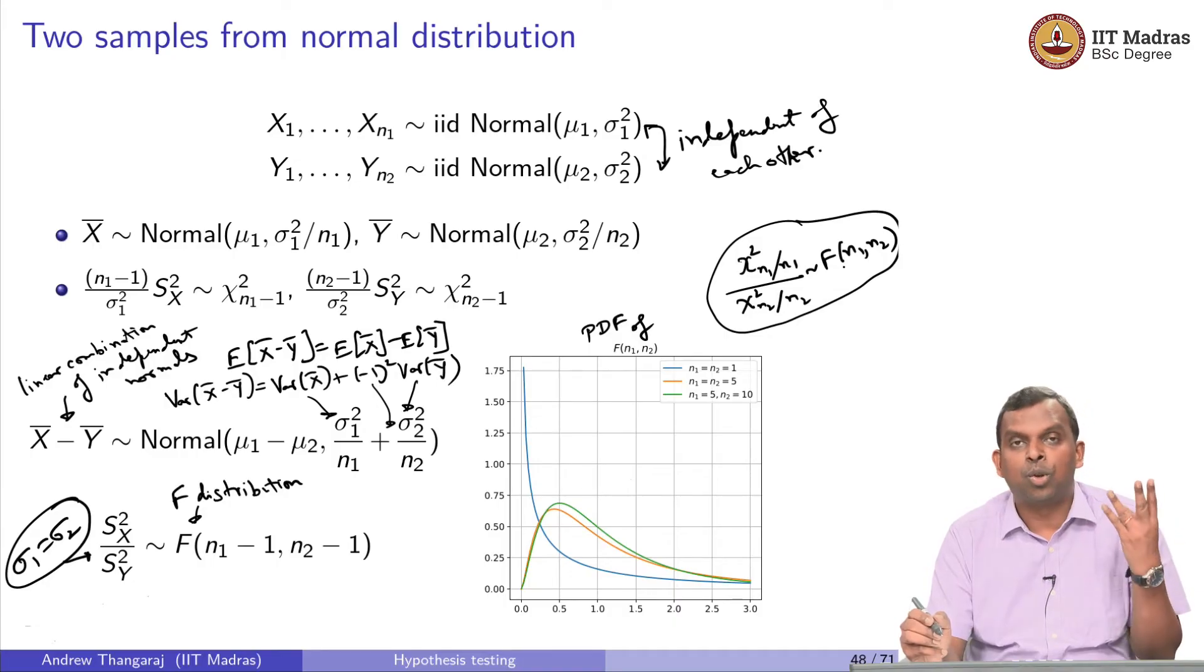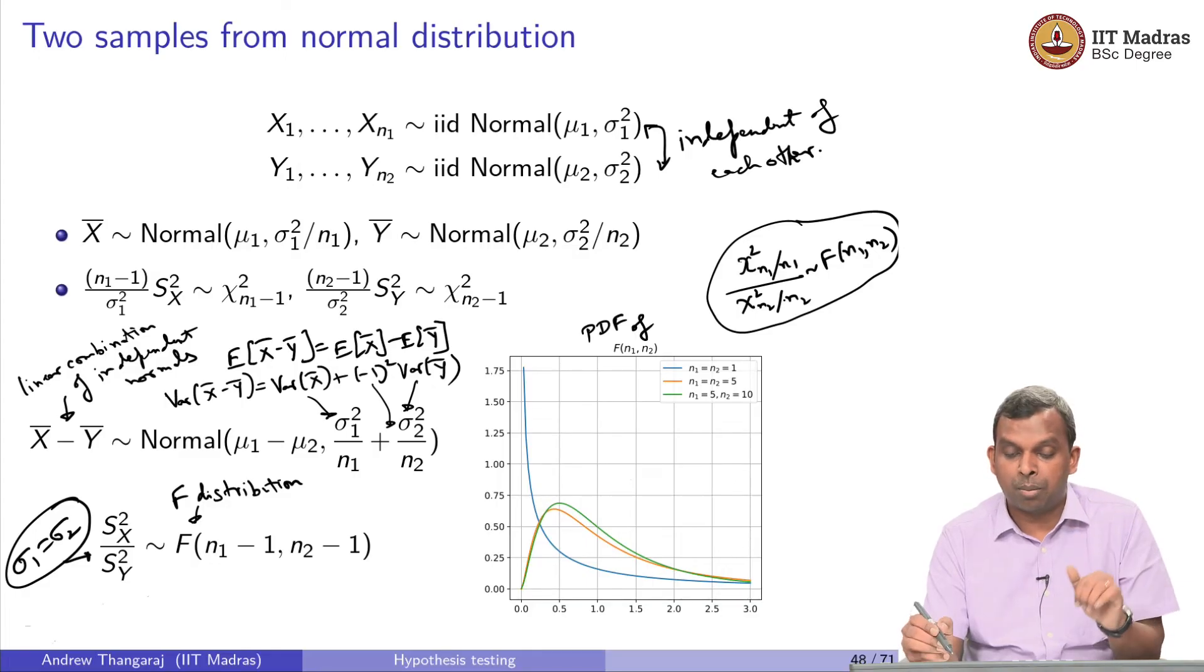You can assume that this F distribution for any n1, n2, you know the CDF, you know the PPF, you know the inverse of the CDF, everything is known to you. So that is important to remember.